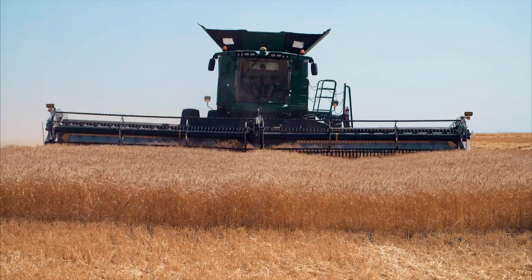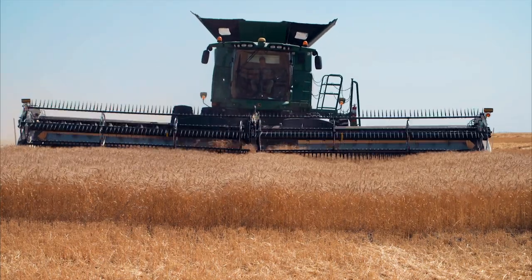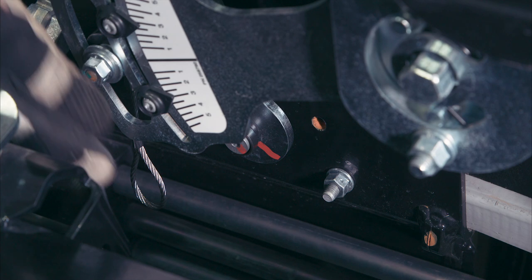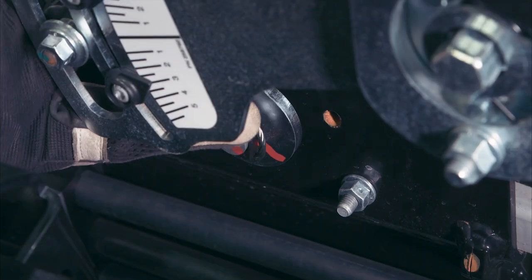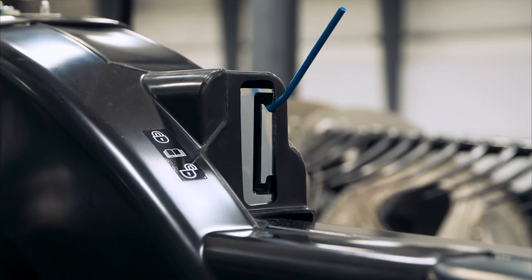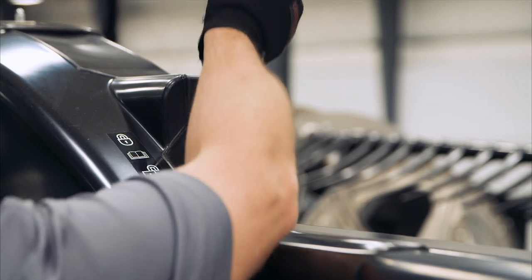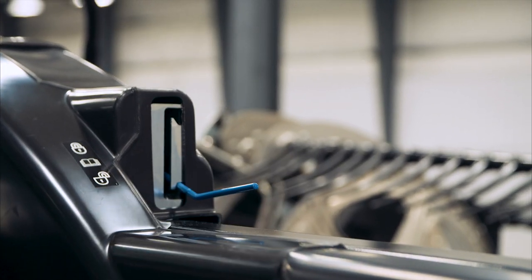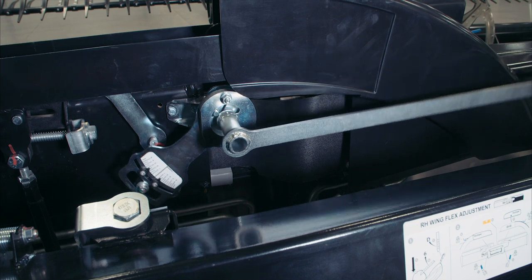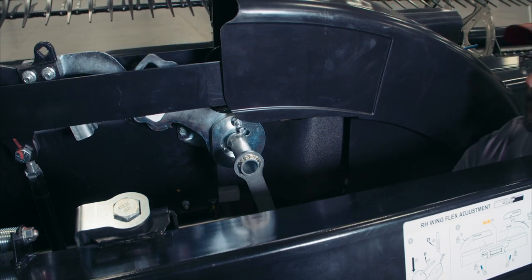Before proceeding, the header float must be set properly. Attach the flex checker cable to the flex checker cable lock. Move the wing lock spring handle to the lower unlock position. You should hear the lock disengage. If not, use the multi-tool to rotate the mechanism so the lock disengages.